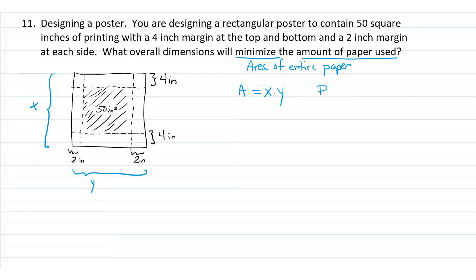This is our primary equation. We need to take this equation and create a function of one variable so that we can minimize it. In other words, we're going to find its derivative, locate the critical values, and determine where we have a minimum. But we can only do that once we have this function written in terms of just one variable. Let's look for a relationship between X and Y. The only other piece of information they've given us is that the area inside of this portion of the paper is 50 square inches.